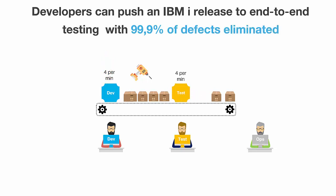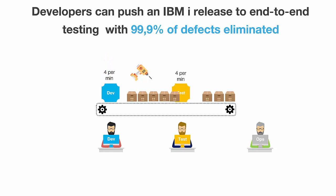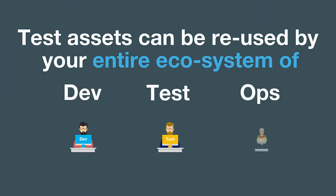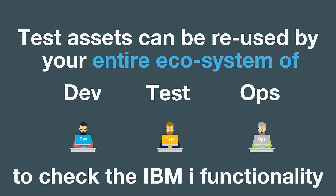The end-to-end QA team receives a fully working IBM i app so that they can concentrate on only the integration defects outside of the IBM i itself. So no more blame between teams, and end-users receive deliveries earlier. It's a fully optimized and compliant process. And you don't have to be a developer to use Verifier — QA teams, business analysts, operation teams, and even end-users can easily start capturing tests.